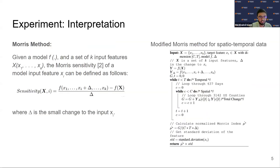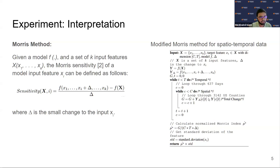Our main focus was actually the interpretation: can we interpret the importance of different age groups? Are elderly people most important, or children, or something else? The key thing is that this can really differ from county to county, because the population numbers and demographic distribution can vary widely. We used sensitivity analysis to estimate that. The method changes the input a little bit and sees how much the model's output changes, then takes the ratio.